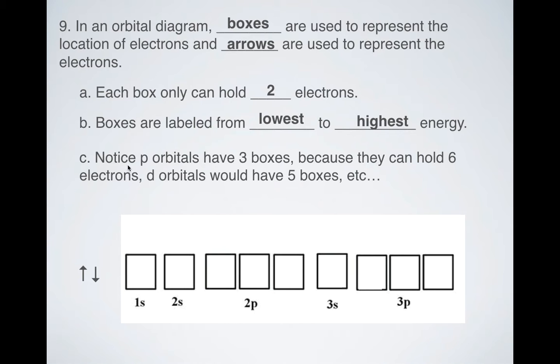Now notice that p orbitals have three boxes. So s orbitals can only hold two electrons total, right? So that means that one box is sufficient to represent them. But p orbitals can hold six electrons, so we need three boxes to represent p orbitals. It doesn't matter if it's 2p, 3p, 4p, etc.